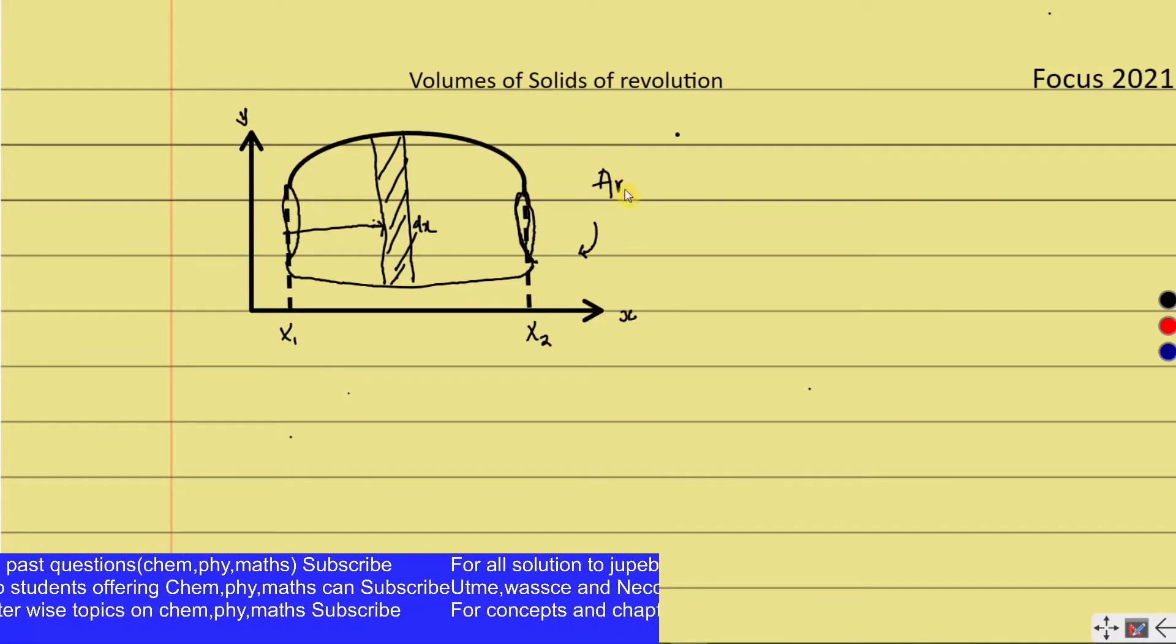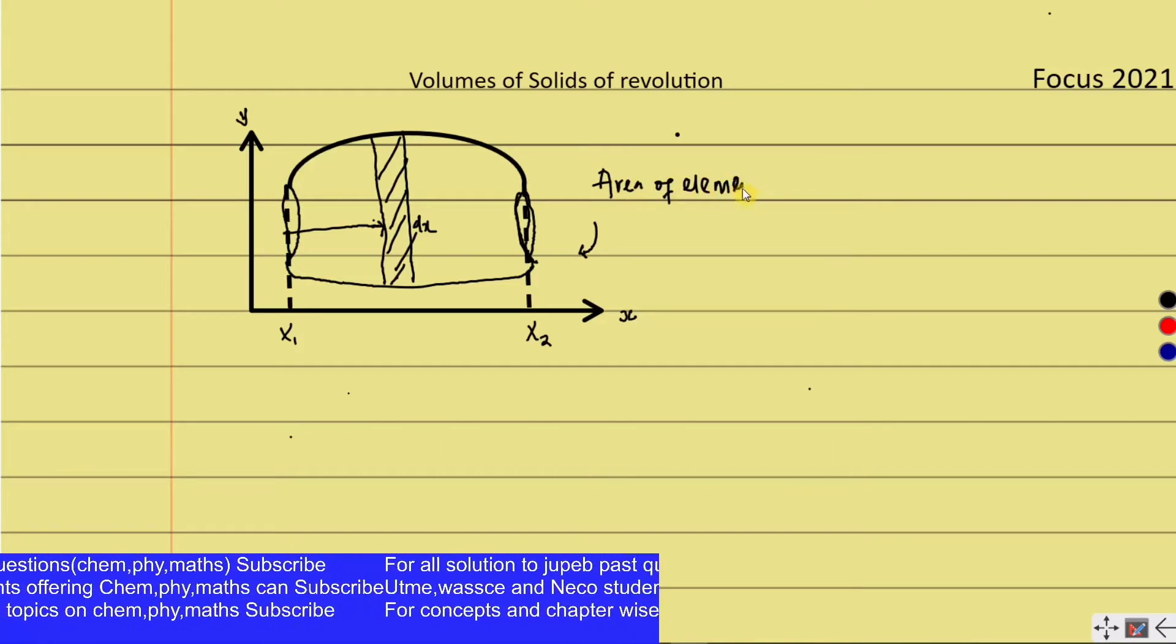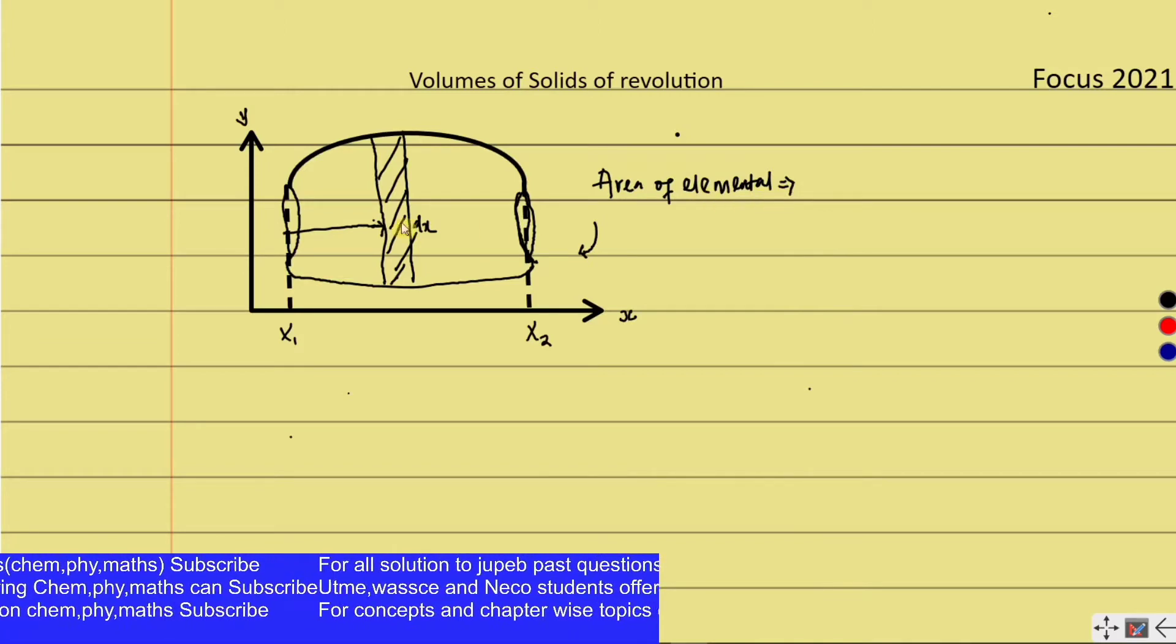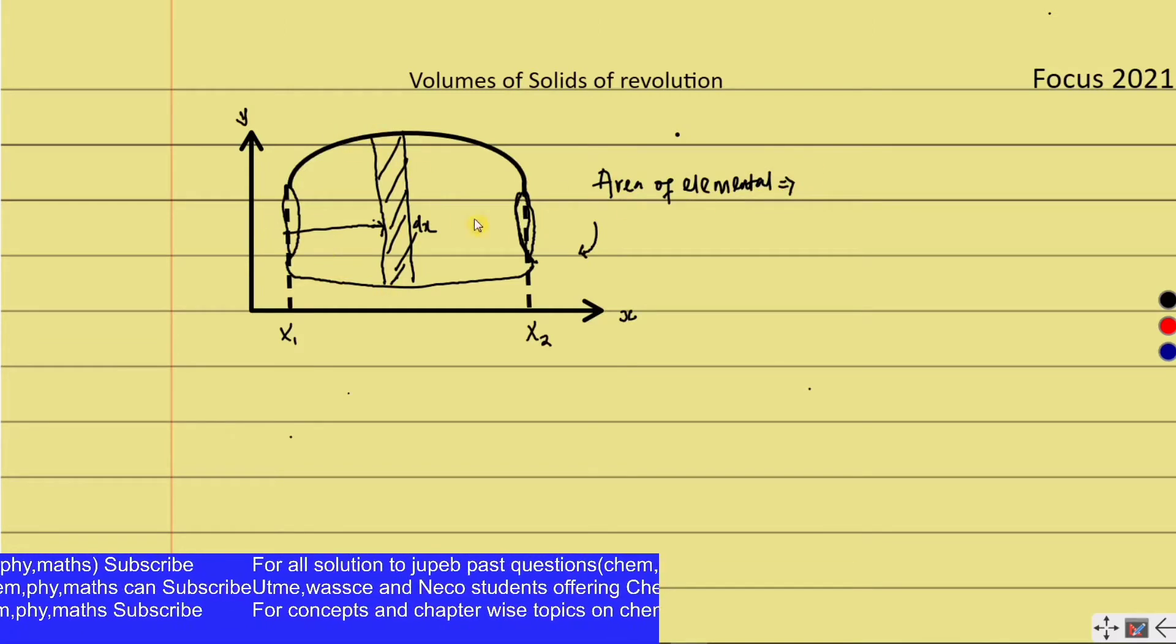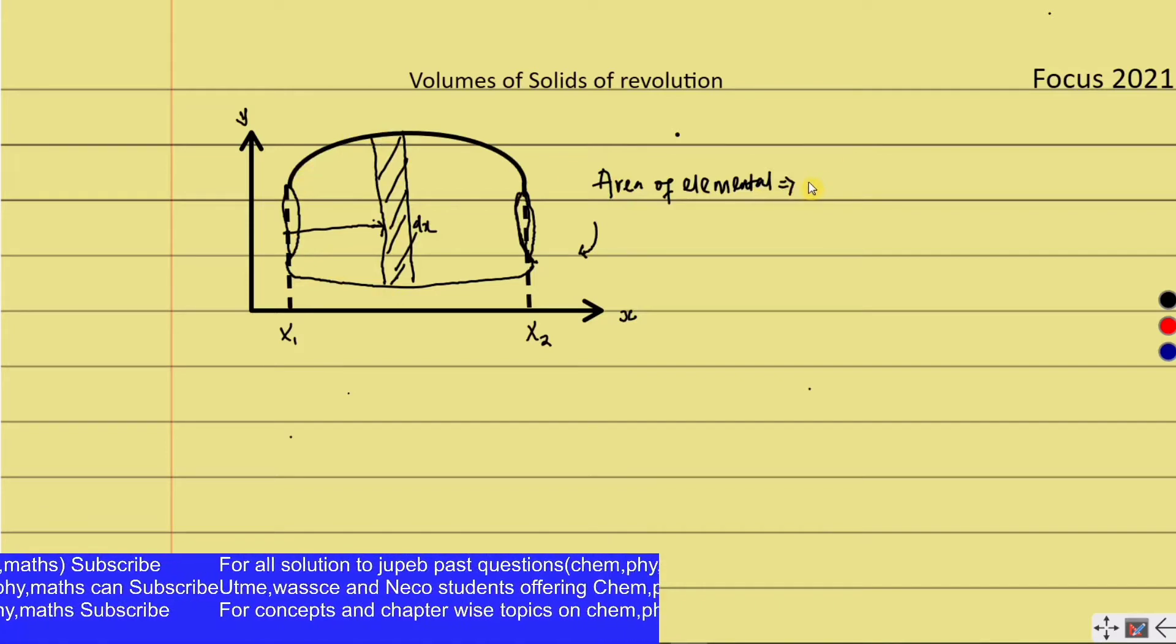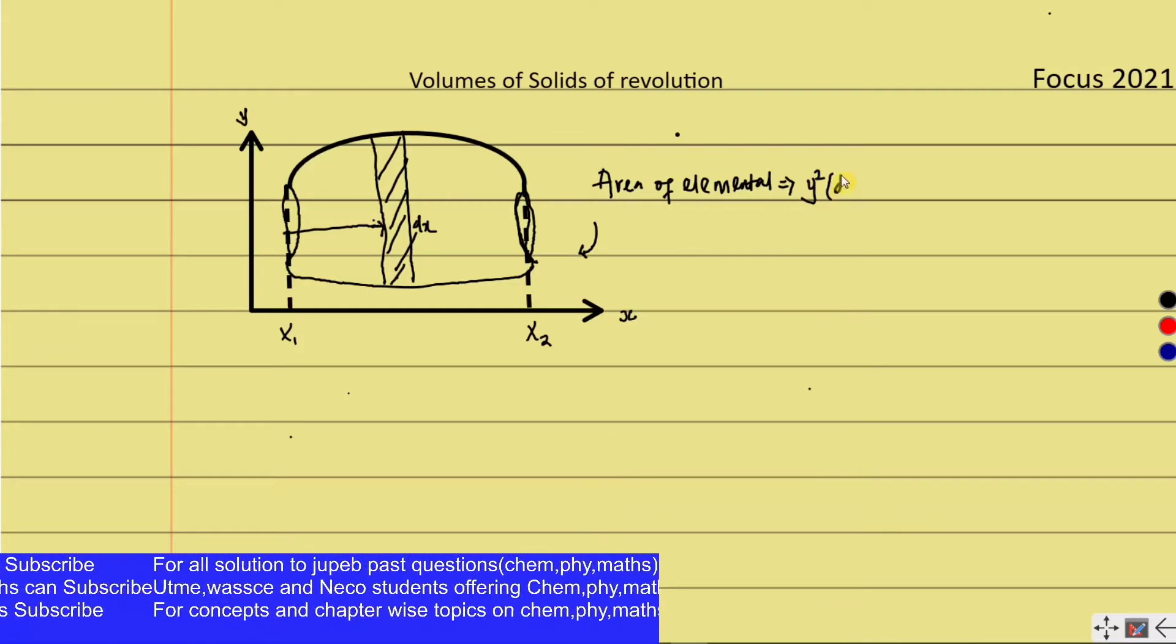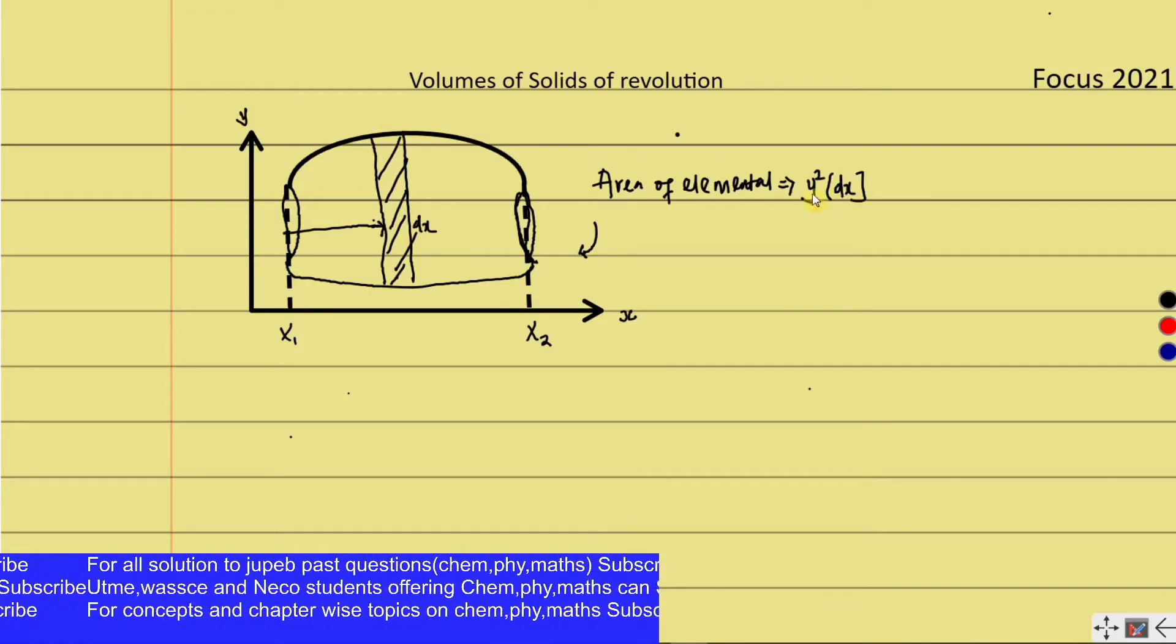The area of this elemental shape, or elemental disk, is always equal to y times y, which is y squared, multiplied by dx. This is like length times spread, so it's y squared multiplied by dx.